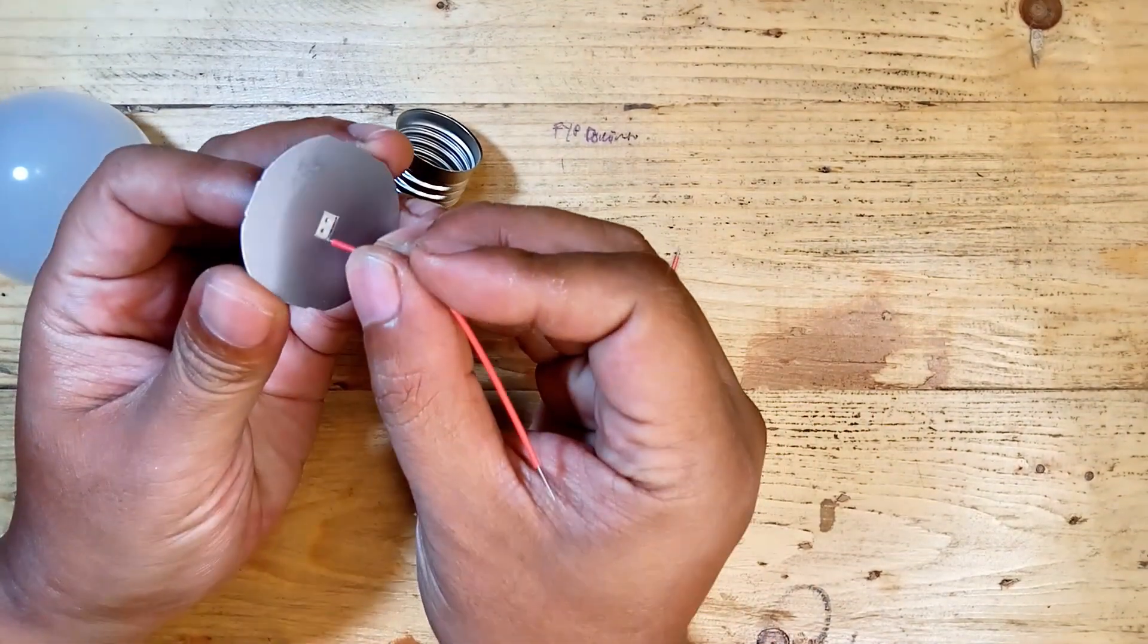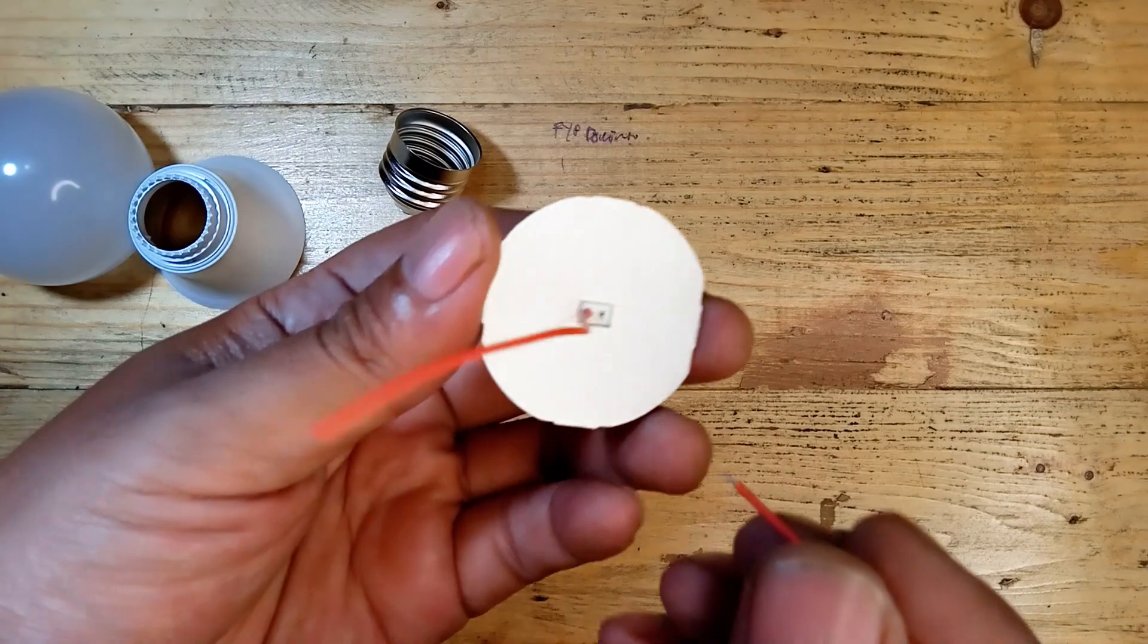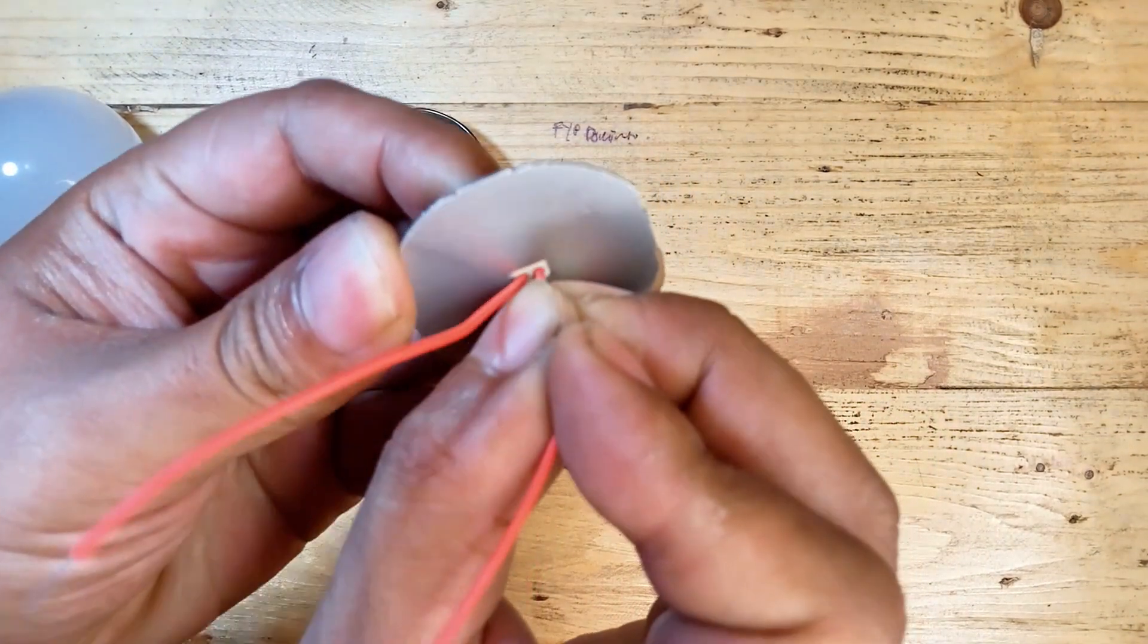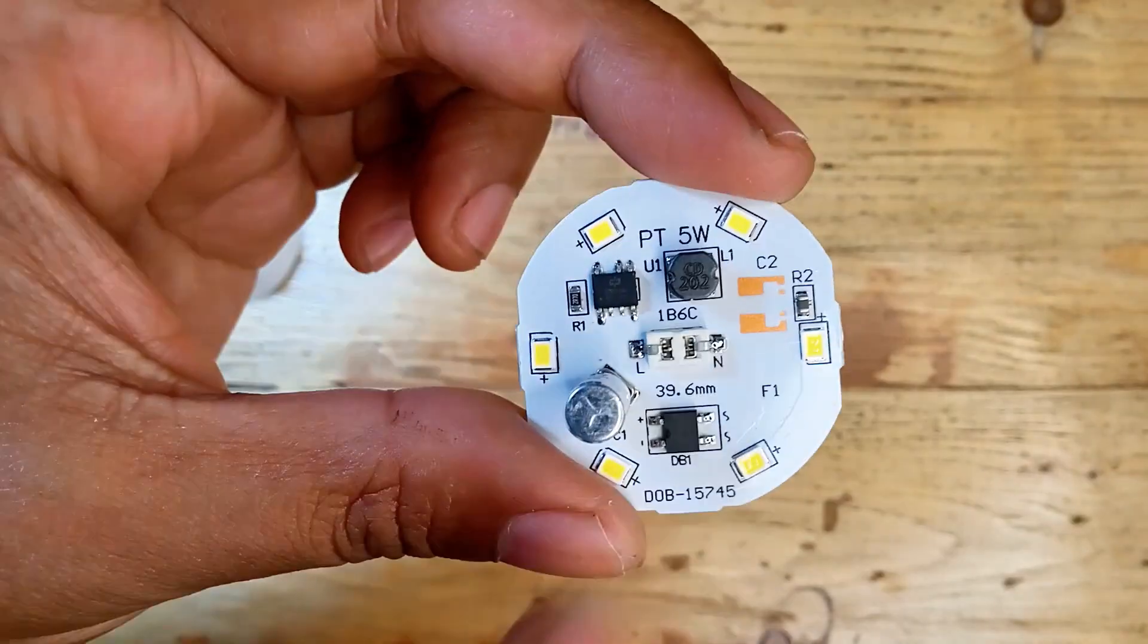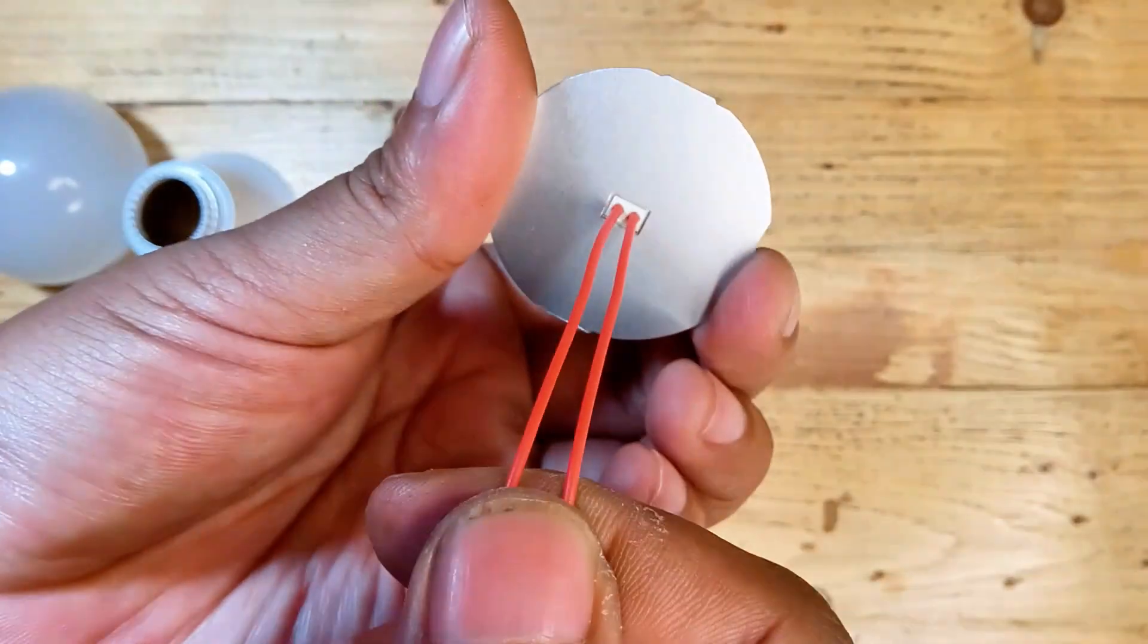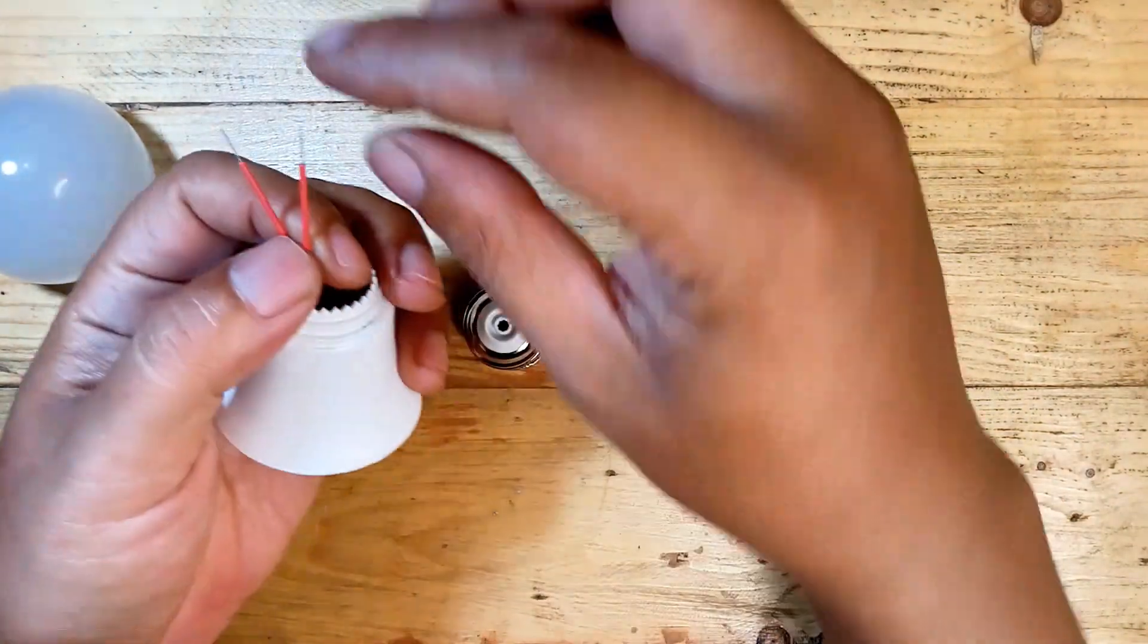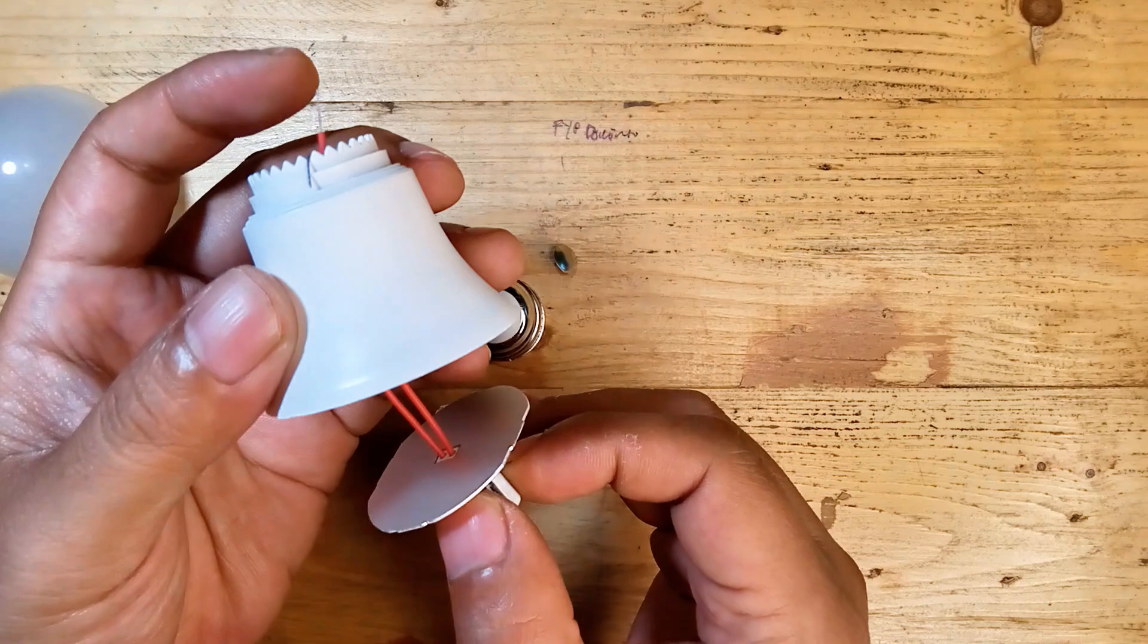First, take the two wires from the PCB module. Insert the wires into the designated sockets on the base. Then bend one of the wires like this and secure it with the connector.